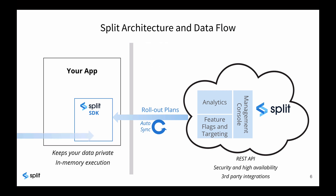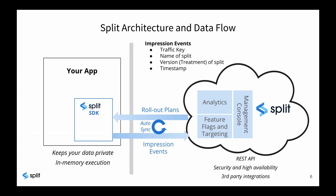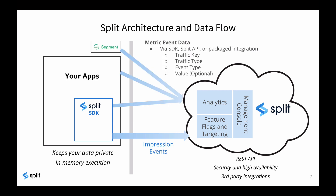When the evaluation is made — whether or not to expose a feature to the user — the impressions are returned to Split, along with the information necessary to track who's seen what. We can also correlate impression data with any events you track that occur in your application to understand how a feature impacts page load time, or if it's having the desired business impact.